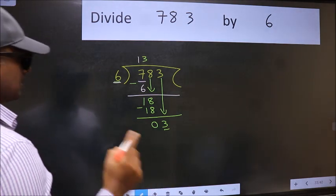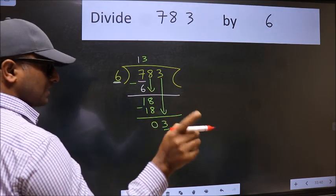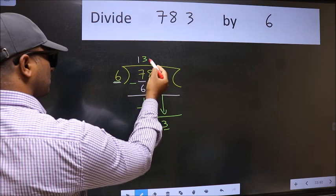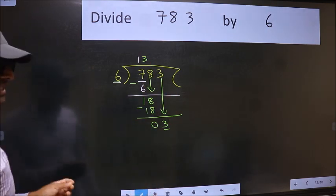Why is it wrong? Because just now you brought this number down. And in the same step, you want to put dot, take 0, which is wrong.